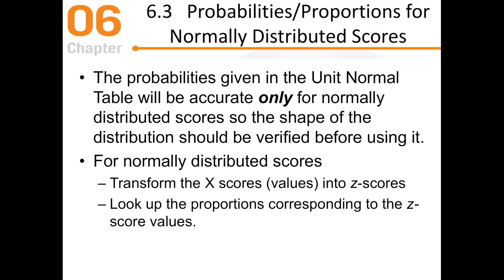The unit normal table will only be accurate if scores are from a normally distributed population. You need to verify it's pulled from a normal distribution first before you proceed. If it has any kind of skewness, it won't work.